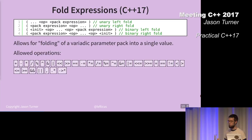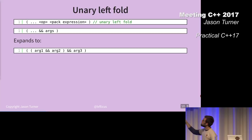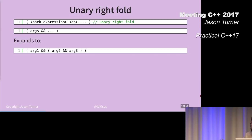Unary left fold, it's pretty straightforward. The dots are on the left, so it is grouping to the left. It's going to evaluate arg1 and arg2, then evaluate that with arg3 and that with arg4. You put the dots on the right, it becomes a right fold, and now the grouping happens on the right with the expansion.